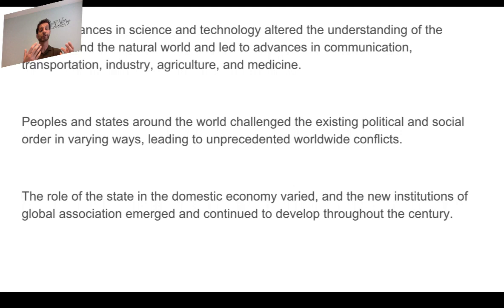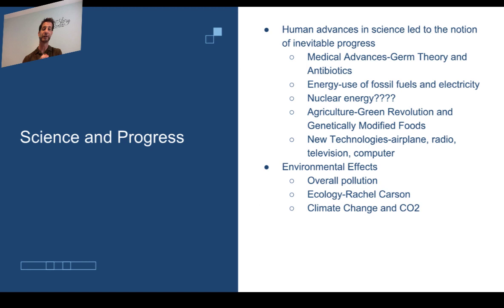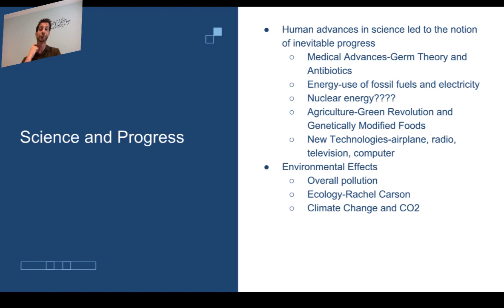Let's jump into that first key concept — science and progress. When I look at the 20th century, this is really what establishes the framework that makes it so unique. In the medical field, there was a switch to germ theory. Previously, the theory involved four different fluids that people thought needed to be kept in balance, and if someone got sick, you'd cut their arm to let the fluids out.